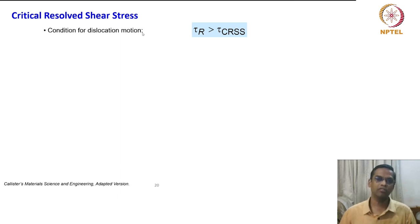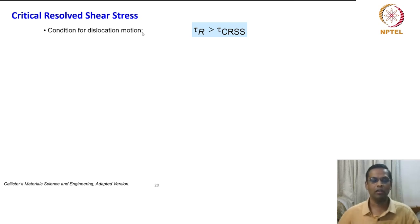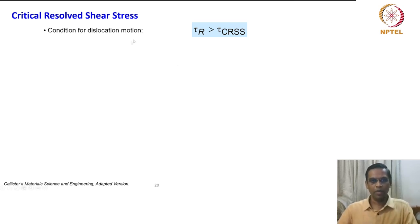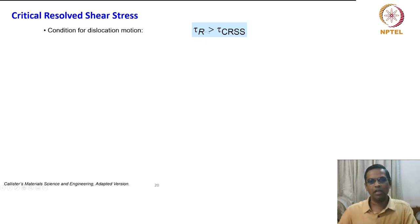In the Peierls-Nabarro model, the crystal is assumed to be free of any other dislocation — just one dislocation in a perfect crystal. Here we are talking about a bulk single crystal where initial conditions could be of any kind. The condition for dislocation motion is that tau_r must be greater than tau_CRSS.